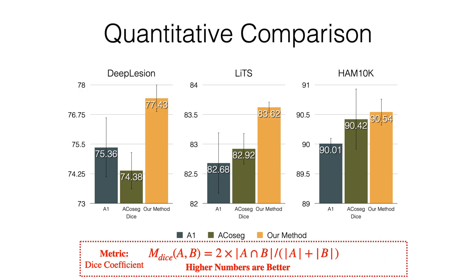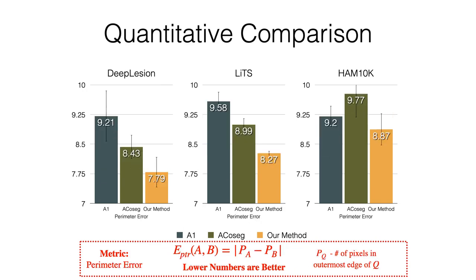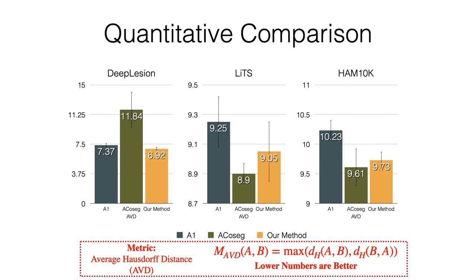Here is a quantitative comparison using Dice score, where higher numbers indicate better performance. On average, our method outperforms A1 and ACOSAC over all three datasets. This is a quantitative comparison using parameter error, where lower numbers are better. Our method achieves the best performance in terms of average parameter error for all three datasets. We also perform a quantitative comparison using AVD, where lower numbers are better, and our method outperforms A1 and ACOSAC on DeepLesion, but fails to outcompete ACOSAC on LiTS and ISIC. However, the differences are only around 0.1, which is very trivial compared with our method's advantages in other metrics.